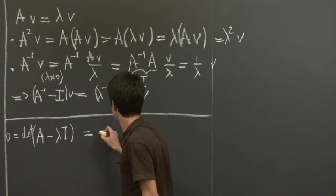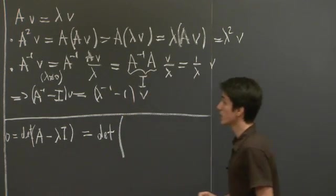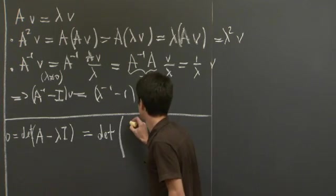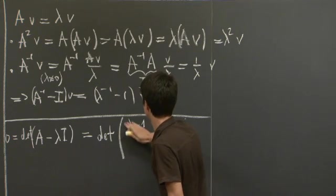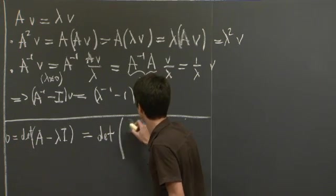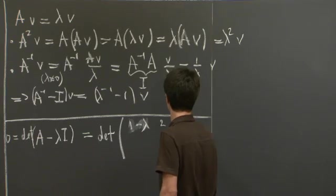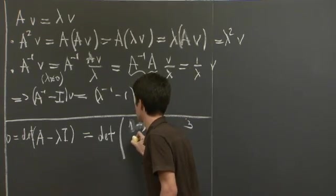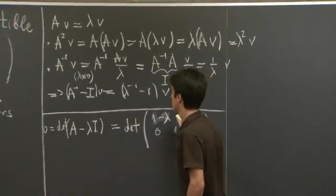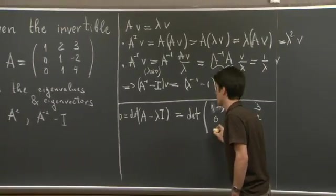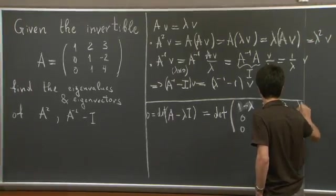So we need to solve the following equation: the determinant of lambda minus 1, 2, 3, 0, 1 minus lambda, 2, negative 2, and 0, 1, 4 minus lambda equals 0.